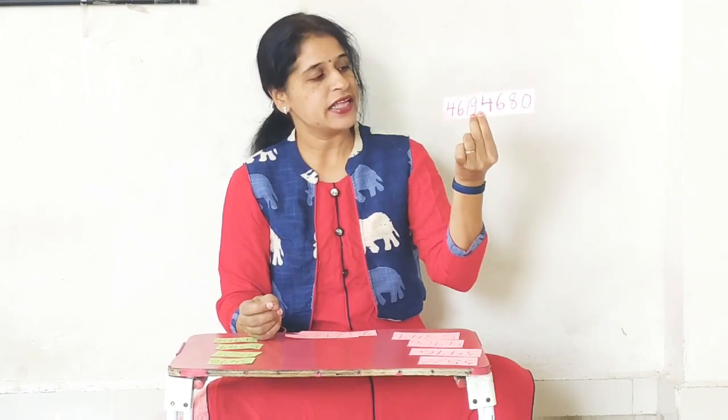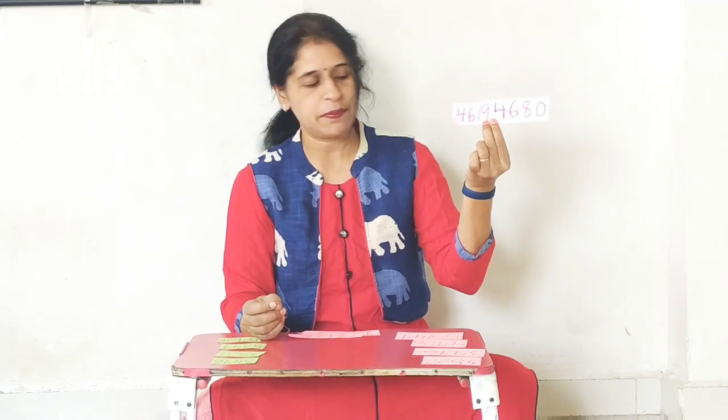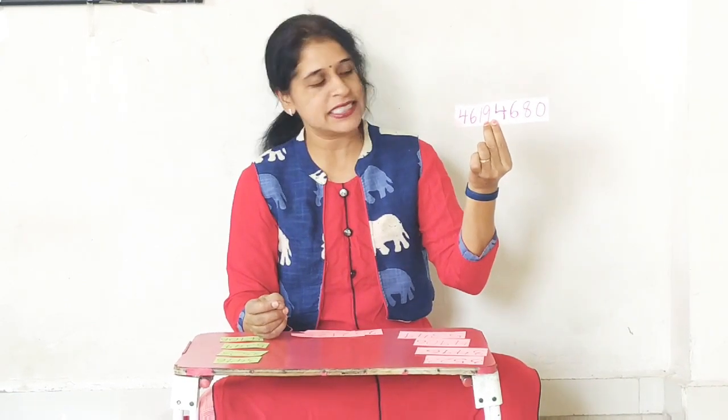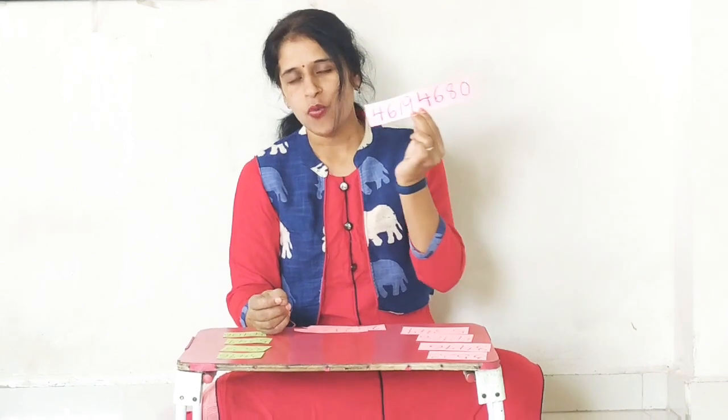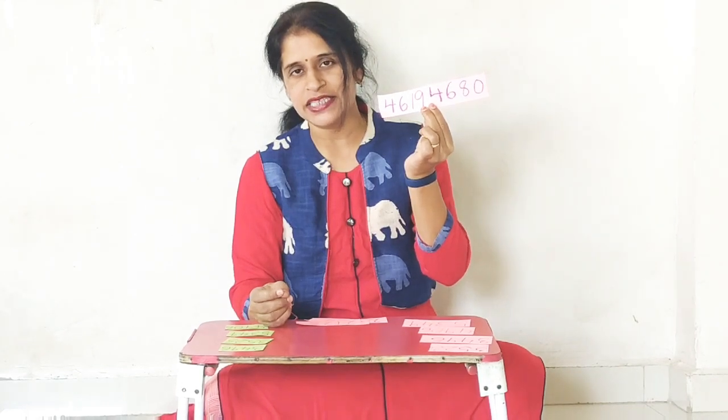Those two numbers were 4680 and 4619. Have you done the comparison of both the numbers 4680 and 4619? Which one was greater? In the thousands place you have 4 and 4 — both the thousands places are the same. Now let's come to the hundreds place. We have 6 and 6 in the hundreds place, so we cannot compare both the hundreds places because both are equal.